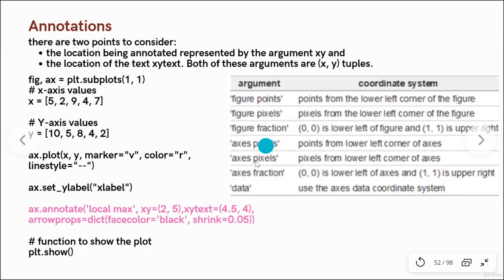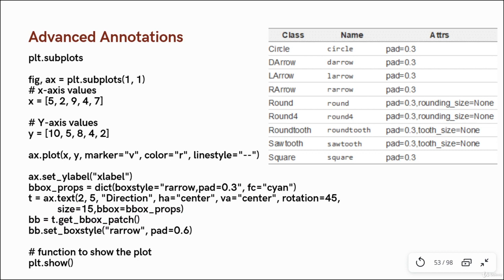So this is the basic annotation. There are different ways of annotations — like for example, you can produce box props as well, which is another different type of annotation that you can do. I will discuss this annotation in the next session. Till that time, keep plotting — it's very important to practice. You can discuss your doubts on the forum and I would be happy to answer. Till that time, thank you so much.